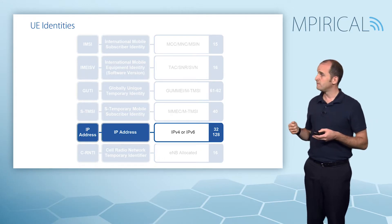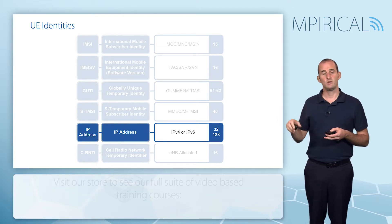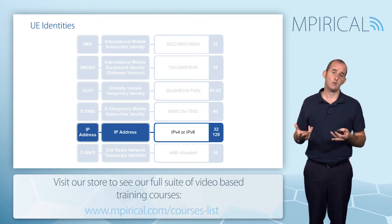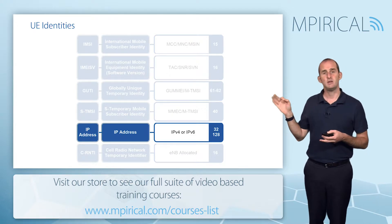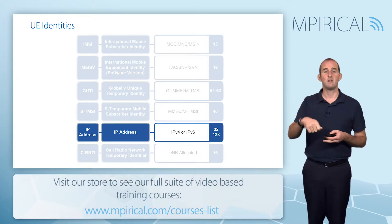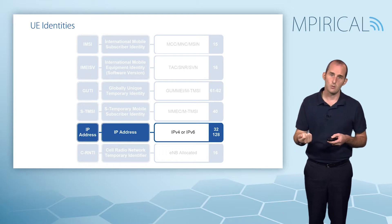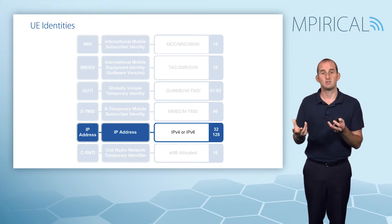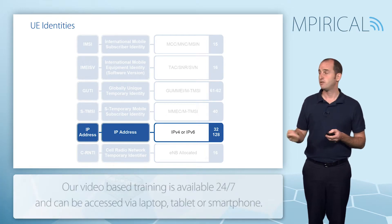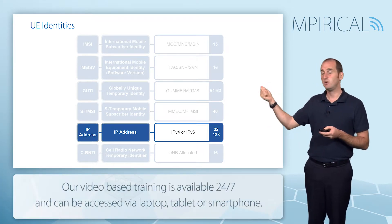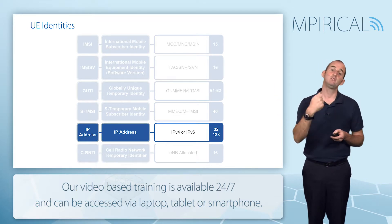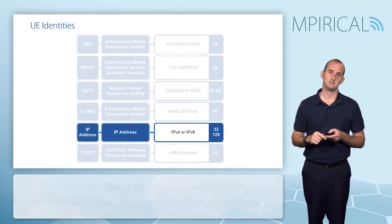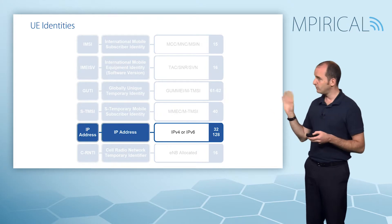Devices in our LTE network — whether it's the eNodeB, the serving gateway, or whatever — do not need to know this particular IP address. The eNodeB and the serving gateway are simply elements of a tunnel called our EPS bearer. So this IP packet, identified with this particular IP address, will simply be tunneled through those devices. So we could have multiple IP addresses.